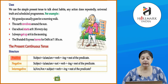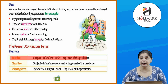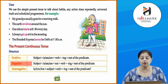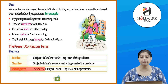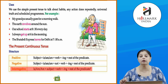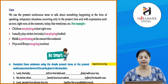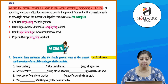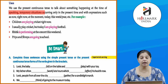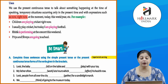Now the present continuous tense. Positive: subject plus is/am/are plus verb plus 'ing' plus rest of the predicate. Negative: subject plus is/am/are plus not plus verb plus 'ing' plus rest of the predicate. We use the present continuous tense to talk about something happening at the time of speaking, temporary situations, and with expressions such as now, right now, at the moment, today, this week, etc.